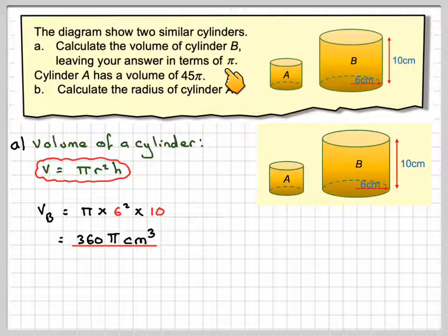It says leave your answer in terms of pi, because that will help you do the next bit. Cylinder A has a volume of 45. Calculate the radius of cylinder A.